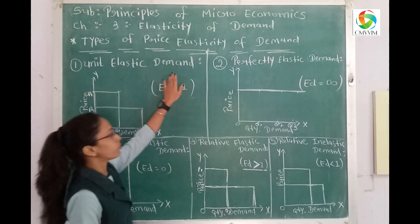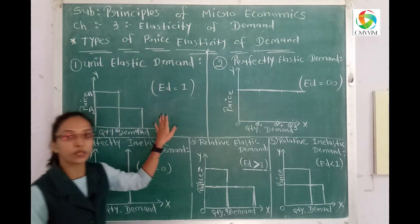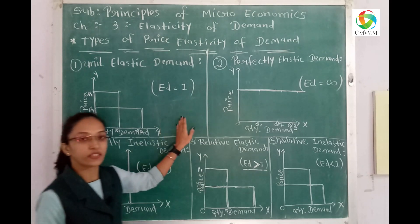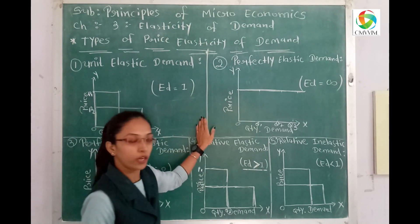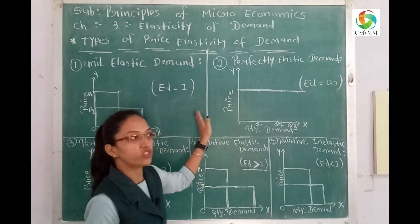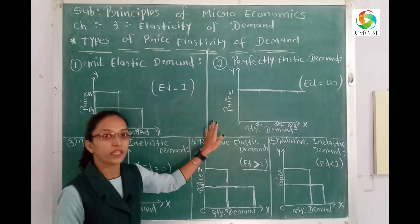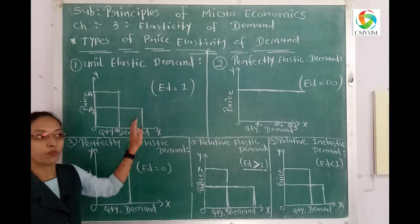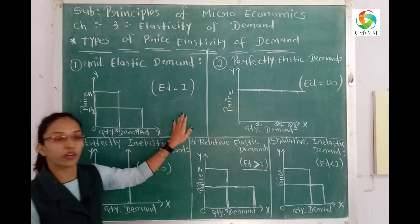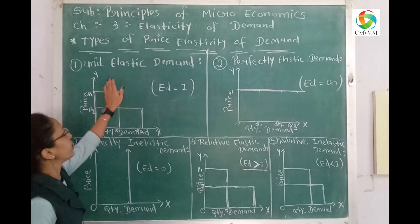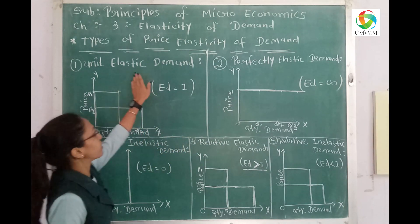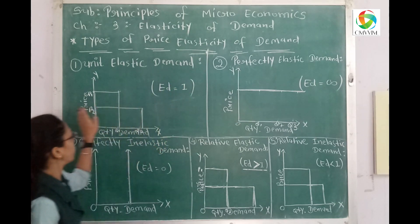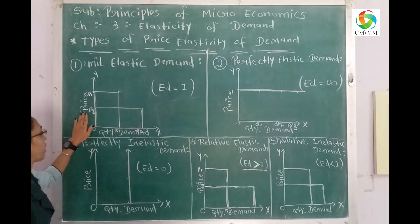We will see the types of price elasticity of demand with graphical representation. First: unit elasticity of demand. What is the meaning of unit elasticity of demand? Proportionate change in price and proportionate change in demand are both equal. It is called unit elasticity of demand.